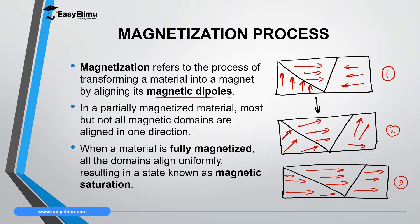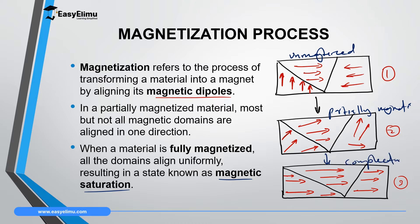When all dipoles are facing perfectly in a uniform, common direction, we say the material has attained magnetic saturation. So the first diagram represents an unmagnetized magnetic material, the second represents a partially magnetized material, and the third represents a completely magnetized material — one that has attained magnetic saturation.